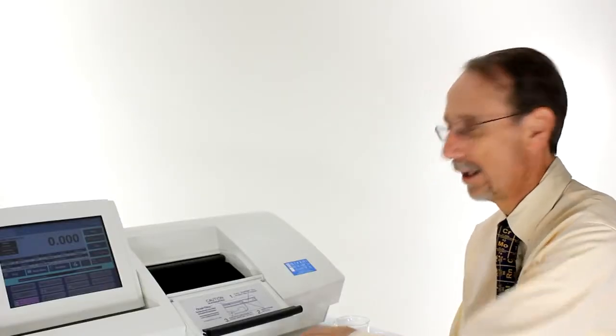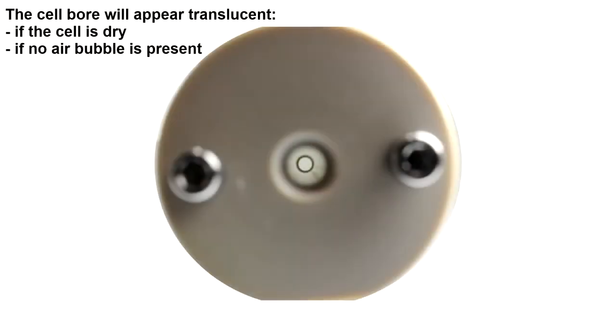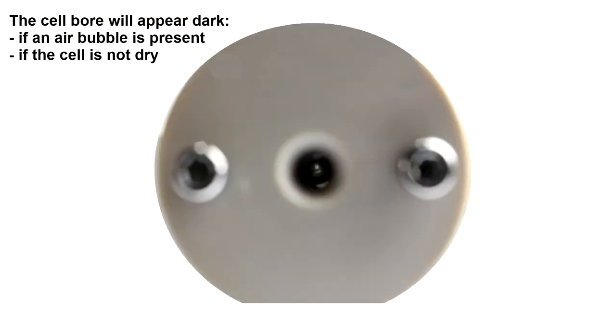First check that the cell is empty and dry. The easiest way to do this is to look down the cell, hold it up to the light and look along the bore.